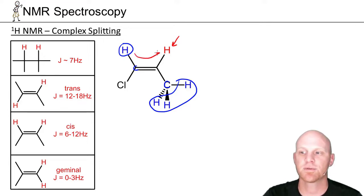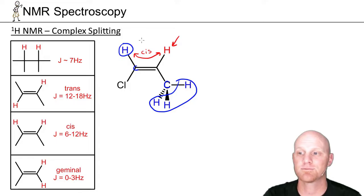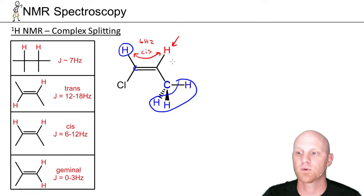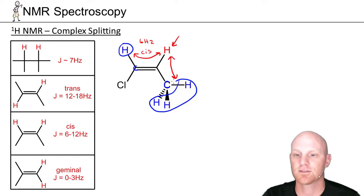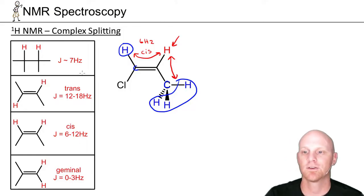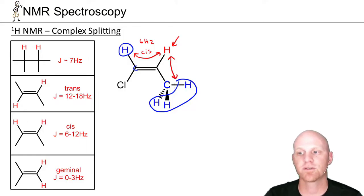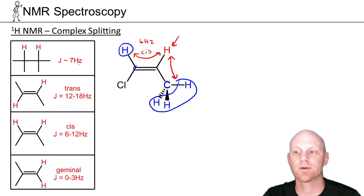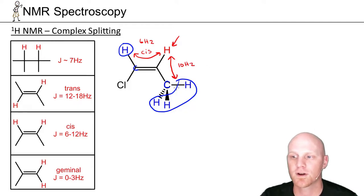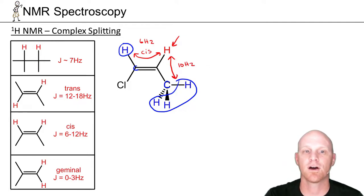The relationship between the red hydrogen and the single neighbor is cis, so that might be in the 6 to 12 hertz range — let's say 6 hertz. The relationship between the red hydrogen and the three sp3 hydrogens involves an sp2 hydrogen with sp3 hydrogens. I don't have an exact number, but let's say it's 10 hertz. We're going to construct a splitting tree based on those numbers.